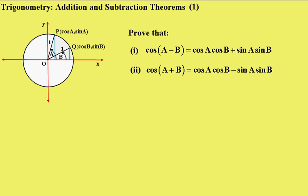Trigonometry, Addition and Subtraction Theorems, number 1. We have to prove that cos(A - B) equals cos A cos B plus sin A sin B, and part 2, that cos(A + B) is cos A cos B minus sin A sin B.